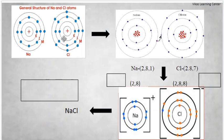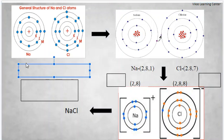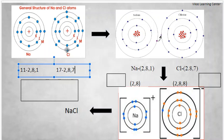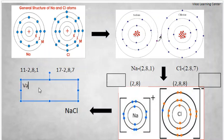Now let us understand by taking examples of how atoms redistribute electrons. If you see here, the sodium atom and the chlorine atom. The atomic number of sodium is 11, so the electronic configuration is 2, 8, 1 — meaning sodium has one electron in its outermost shell. Whereas the atomic number of chlorine is 17, so the electronic configuration is 2, 8, 7 — chlorine has 7 electrons in its outermost shell. The electrons present in the outermost shell, or the valence shell, are termed as valence electrons.